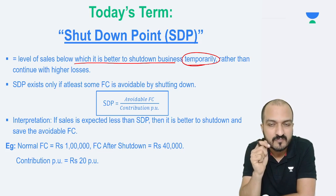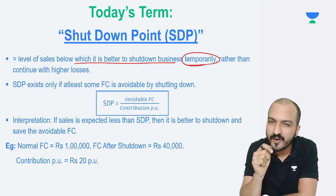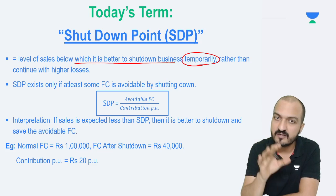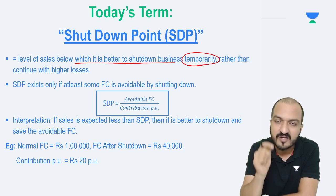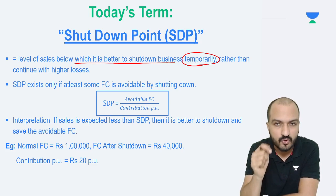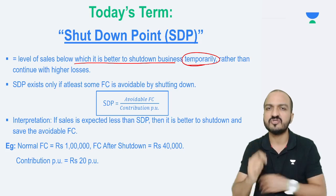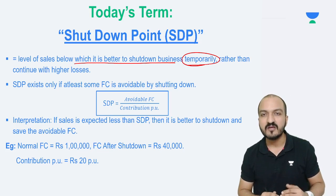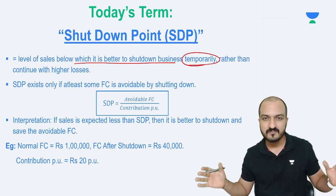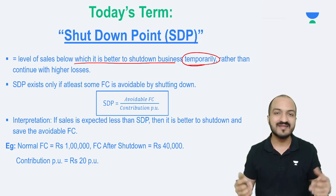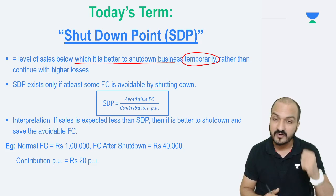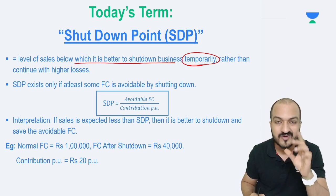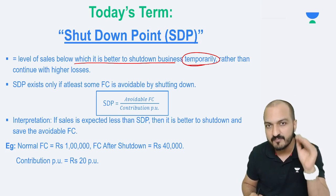You know breakeven point — if your sales are expected to be less than BEP, then you will incur losses. Now, just because you're going to incur losses, does it mean you will shut down the business? No, because if you shut down, you might incur more losses since you will still have to bear fixed costs. So shutdown point is another level which is always lesser than breakeven point.